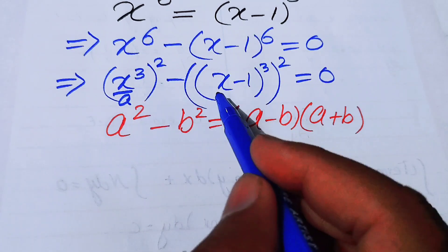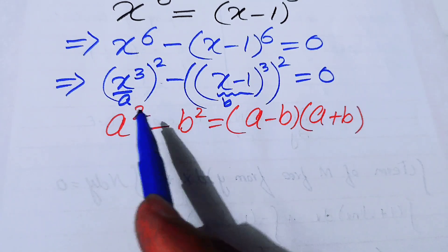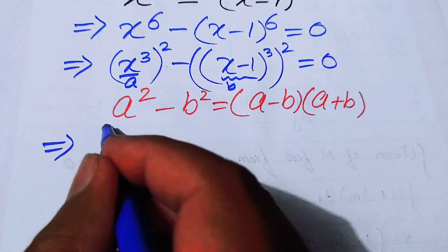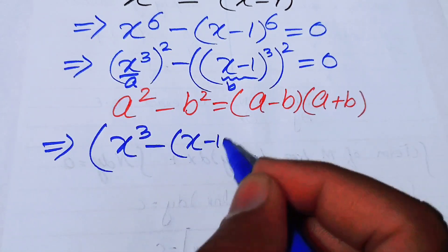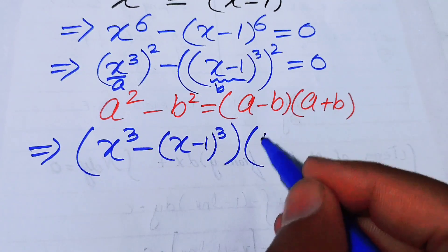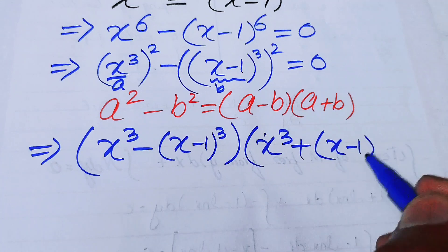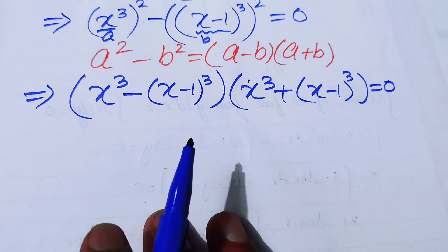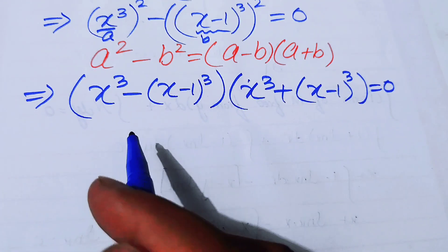Here the value of a is x³ and the value of b is (x−1)³. Putting these values into the formula, we get: [x³ minus (x−1)³] times [x³ plus (x−1)³] equals 0.